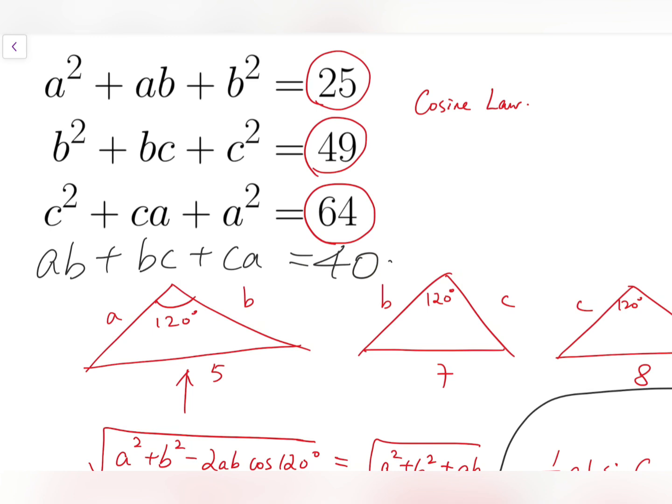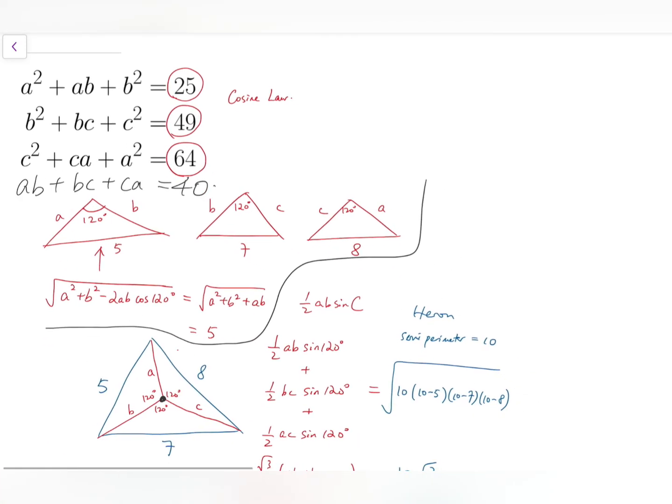So now I can add them up. If I add up these four equations, I'm going to have 2a squared, 2b squared, 2c squared, and then I'll have 2ab, 2bc, 2ca. And that is 25 plus 49 plus 64 plus 40, which is 178. So, recall that a plus b plus c all squared equals a squared plus b squared plus c squared plus 2 of ab plus bc plus ca.